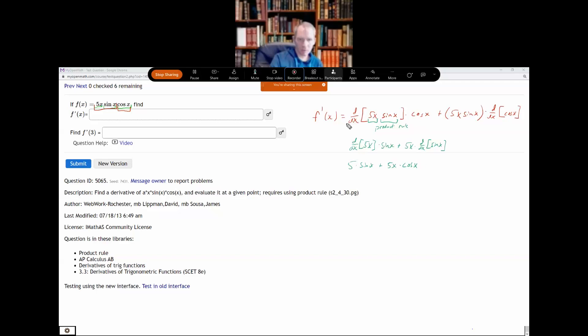So this derivative is this whole thing. So putting my pieces together here. I took this derivative and then I have times cosine x plus 5x sine x. The derivative of cosine x is negative sine x.